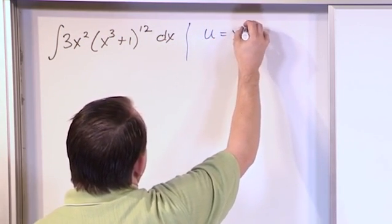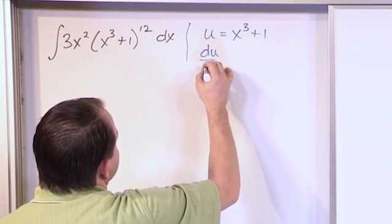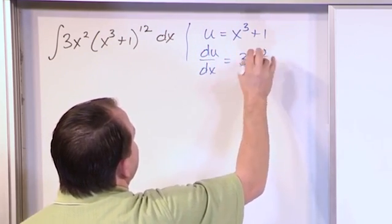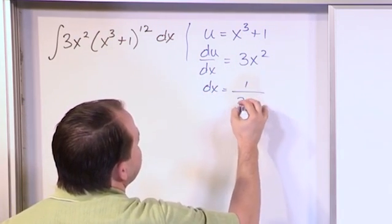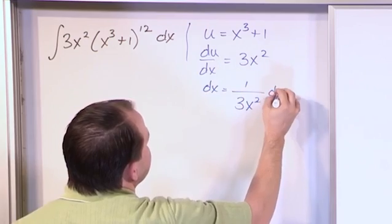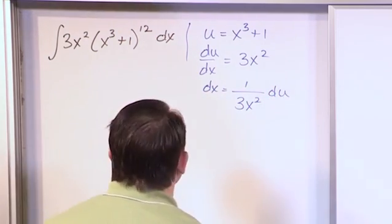u is equal to x cubed plus 1. So then du/dx is 3x squared, and then dx is equal to 1 over 3x squared du. So that is our information we need to go ahead and substitute in.